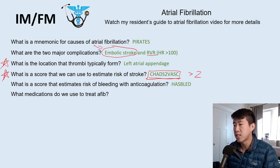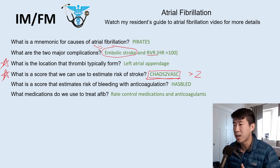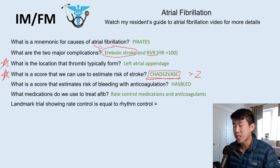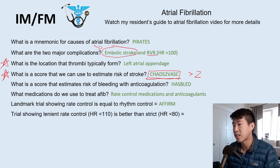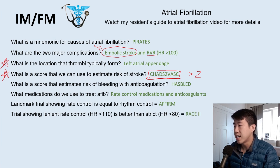For medications to treat AFib: we use blood thinners and rate control medications. The two main classes are rate control — beta blockers and calcium channel blockers — and blood thinners like warfarin or rivaroxaban and apixaban. A landmark trial showing rate control equals rhythm control was the AFFIRM trial; rhythm control had a trend toward increased mortality and higher side effects. Another important trial, RACE2, showed that a lenient rate control goal of heart rate less than 110 is better than strict control less than 80. Knowing these trials will impress your team.